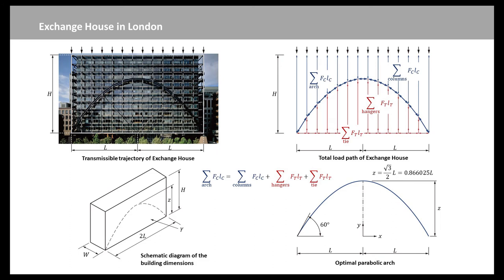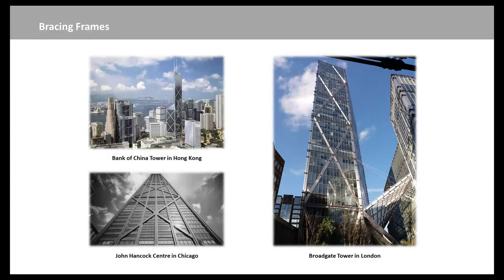The total load path of the Exchange House involves columns, hangers, tie, and arch. Here, we also can see that the horizontal load path of the arch is equal to the horizontal load path of the adjacent tie plus the vertical load path of the adjacent hangers plus vertical load path of the columns that were eliminated when the arch system was used instead of sitting directly on the ground.